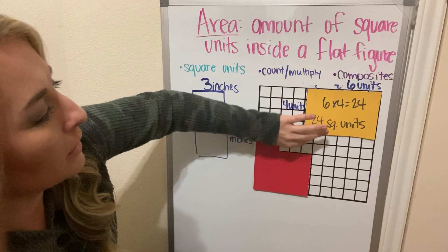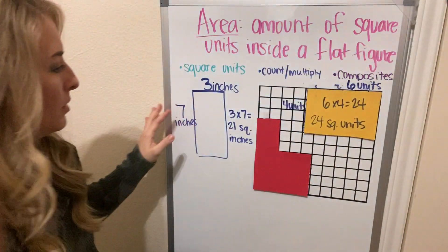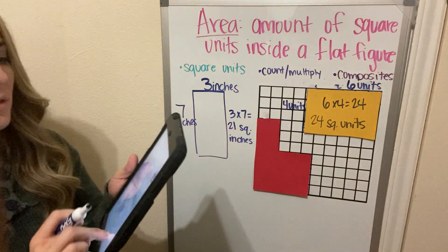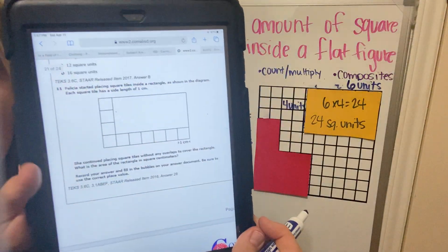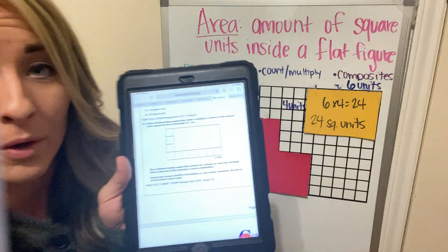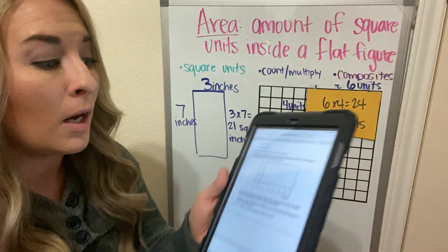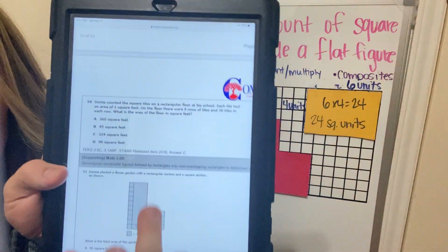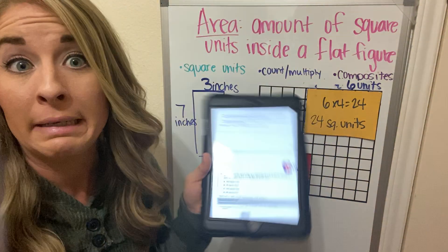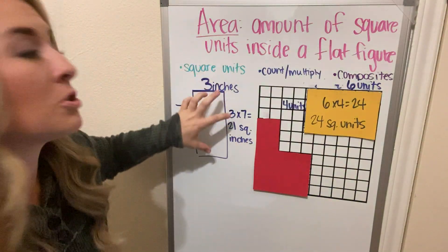Area looks a lot like an array — how much space is it taking up? On your state assessment, sometimes area questions are given to you with a grid where you could draw and count squares, which is the simplest way. But sometimes they give it to you as just a word problem with no picture and nothing to help you. When there's nothing there to help you, you will have to multiply.